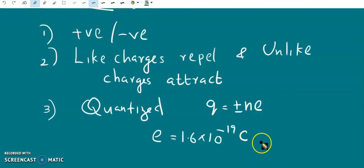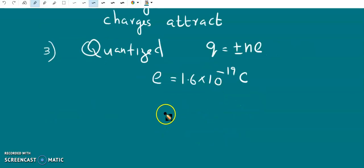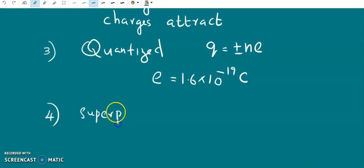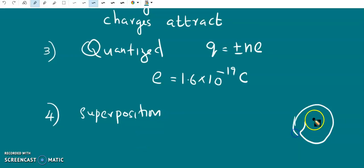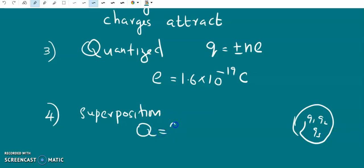This is called the quantization of electric charge. The fourth property is that electric charges are additive — that means it obeys the superposition principle. The total electric charge is the algebraic sum of the charges at different regions. Suppose we have a body with charges Q1, Q2, Q3, etc. Then the total charge Q is equal to the algebraic sum of the individual charges.